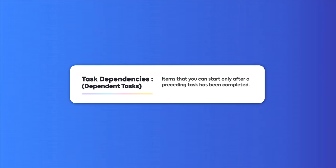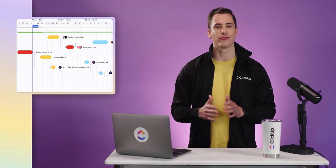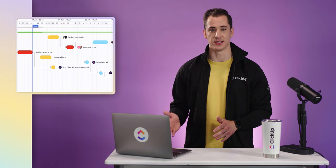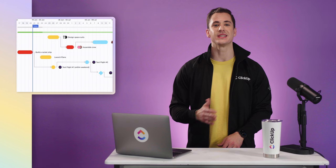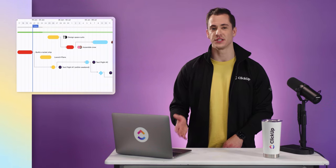And finally, a Gantt chart clearly maps out task dependencies. Task dependencies, or dependent tasks, are items that you can start only after a preceding task has been completed — like brushing your teeth in the morning is dependent on you first drinking your orange juice, because why would anyone do it the other way? A Gantt chart maps out every individual task and its dependencies, so your team knows exactly how their work impacts other team members.